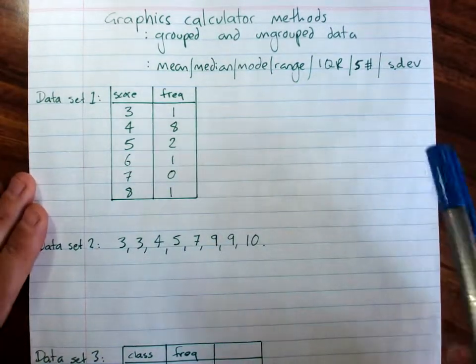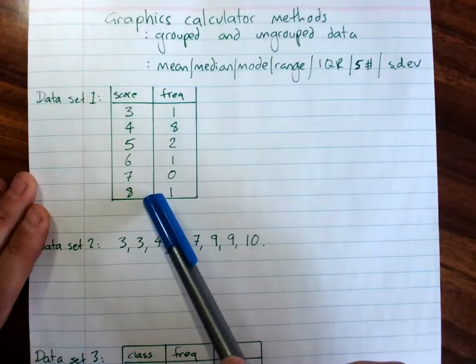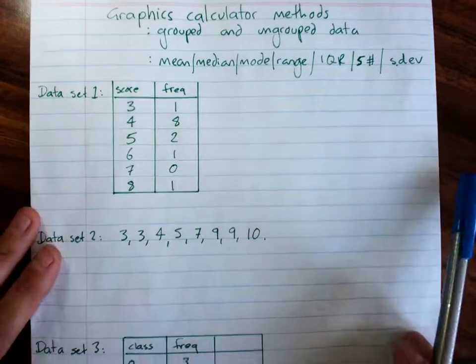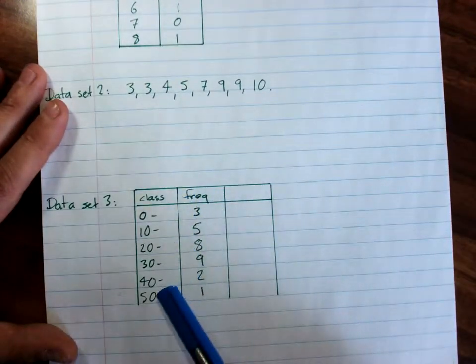So you see here I've got data in three forms. I've got an ungrouped frequency table, I've just got a set of data, and I've got a grouped frequency table.